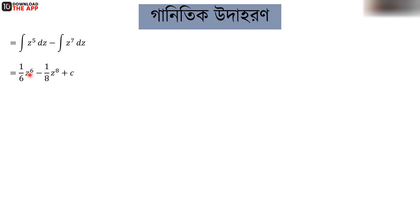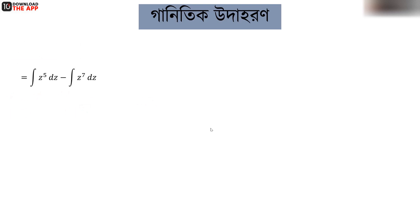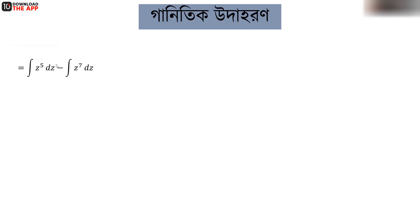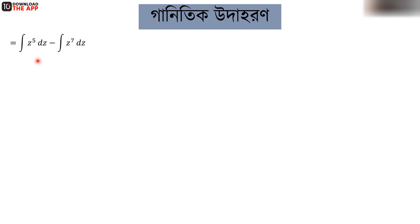We have z to the power 6 by 6 minus 1 by z to the power 8. Since sin x equals z, we convert back: z to the power 6 becomes sin to the power 6, and z to the power 8 becomes sin to the power 8x.